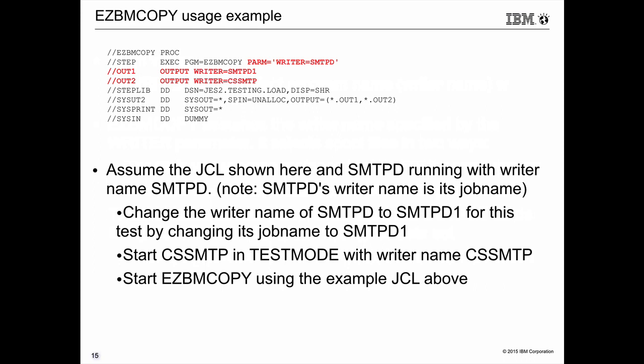To configure the EZBMCopy utility: it has a single WRITER parameter specifying the writer name associated with EZBMCopy, and it takes spool files where the writer name or destination matches that parameter. In the sample JCL, EZBMCopy is specified with PARM of WRITER=SMTPD — hijacking the original SMTPD writer name. This is followed by two output cards: one specifying writer CSSMTP for test mode, and one specifying writer SMTPD1 for the renamed production daemon. You change the SMTPD writer name to SMTPD1 by changing its job name, start CSS SMTP in test mode with writer name CSSMTP, and start EZBMCopy with this JCL.